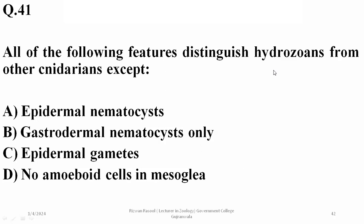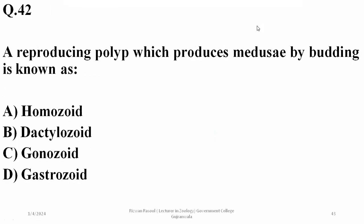Question 41: all of the following features distinguish hydrozoans from other cnidarians except — hydrozoan polyps have epidermal nematocysts, gastrodermal nematocysts are absent in hydrozoan polyps, they have epidermal gametes, and no amoeboid cells in the mesoglea. However, option B is a feature not found in all hydrozoan polyps. Question 42: a reproductive polyp that produces medusae by budding is known as a gonozooid — the right option is C.